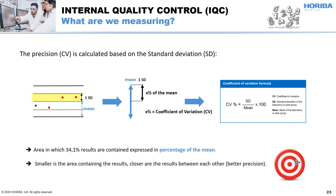What are we measuring? The precision calculation is based on the SD. 1 SD is the distance from the mean, and this gap includes 34% of the results. If the value of 1 SD is smaller, the 34% of results within this gap will be mechanically closer to each other and the precision will be better. The SD expressed as a proportion of the mean gives the coefficient of variation, which reflects the precision. The smaller the CV, the better the precision.